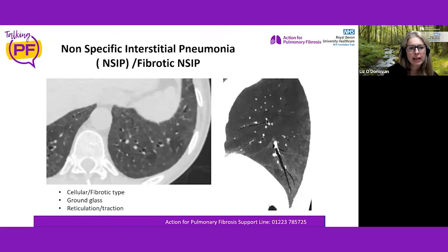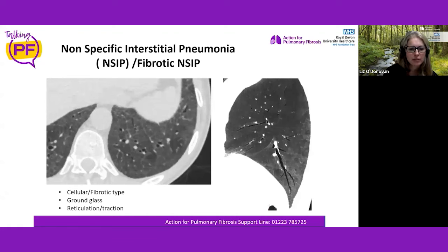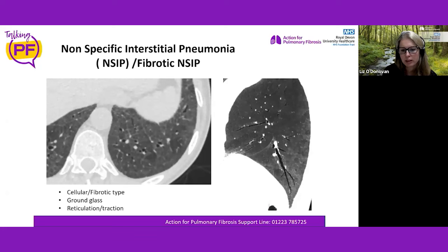Another case is nonspecific interstitial pneumonia, or NSIP, which can be reversible cellular or can progress to a fibrotic pattern. The left image shows ground glass milky lung with airways and vessels still visible. The sideways view shows airways getting dragged toward the periphery, with thin reticulation lines and milky ground glass change.